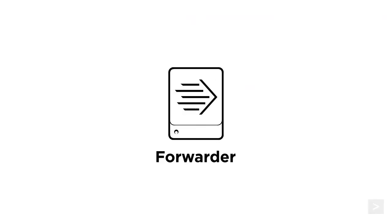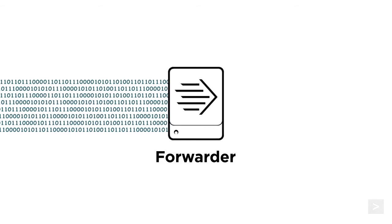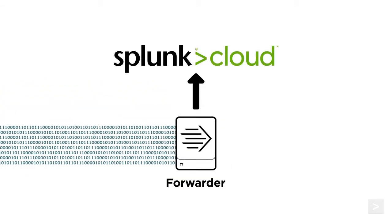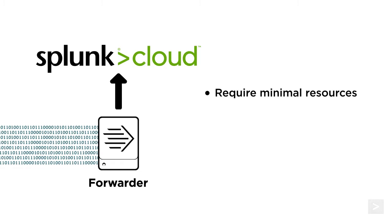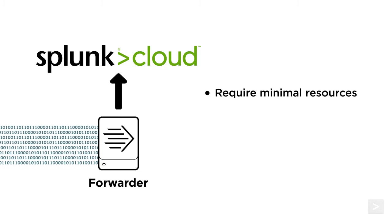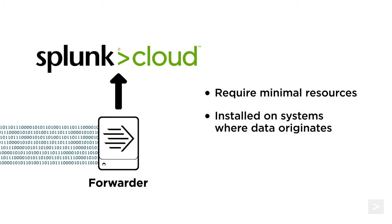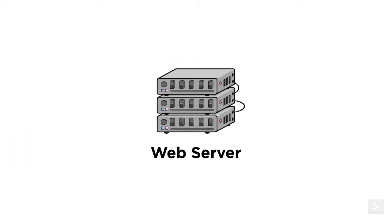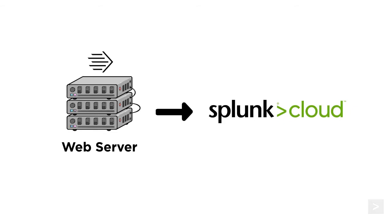Forwarders are Splunk instances that consume data and forward it to Splunk Cloud for indexing. They require few resources and have minimal impact on performance, allowing them to be installed on the machine where the data originates. In this example, we have an Apache web server we would like to monitor. We will install a Universal Forwarder on the server and have it send Apache data to Splunk Cloud.